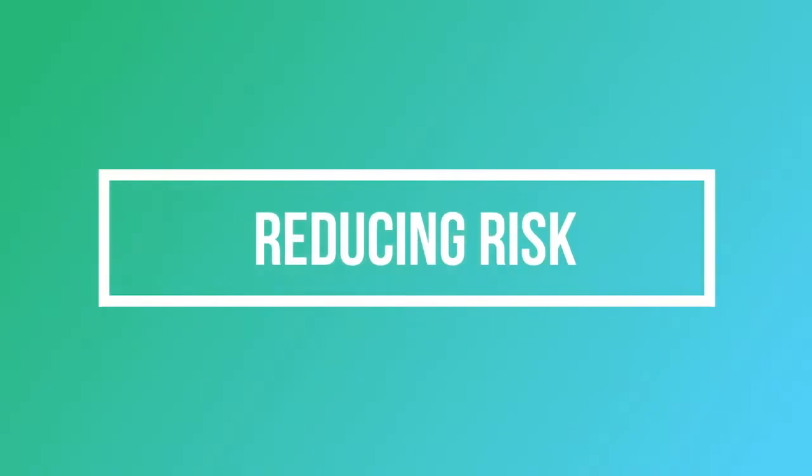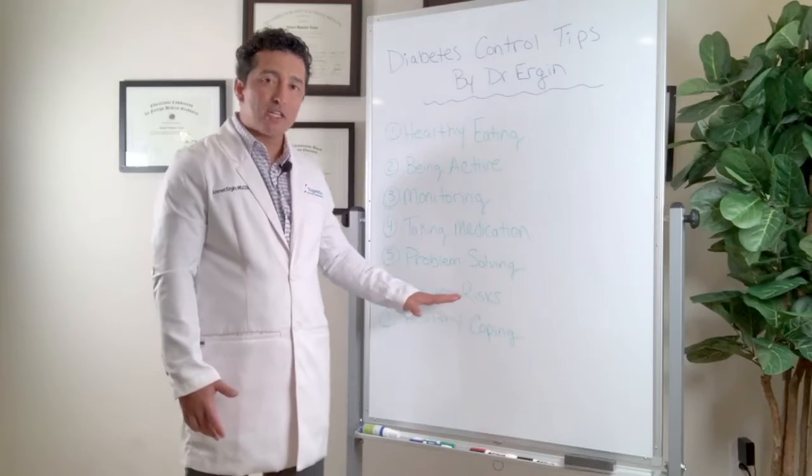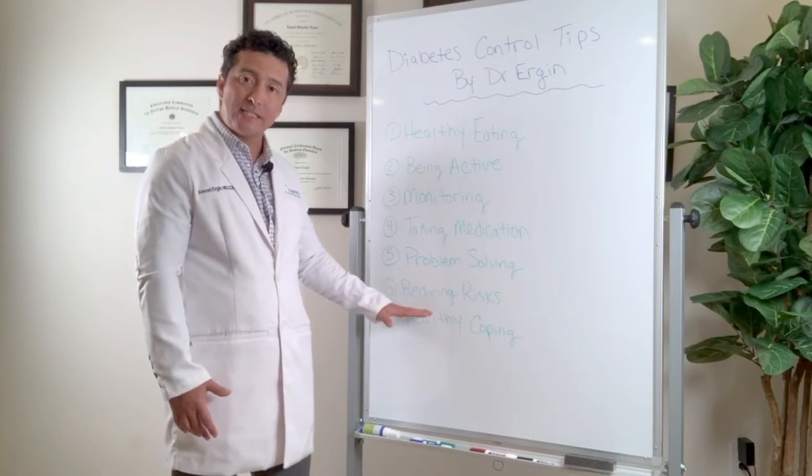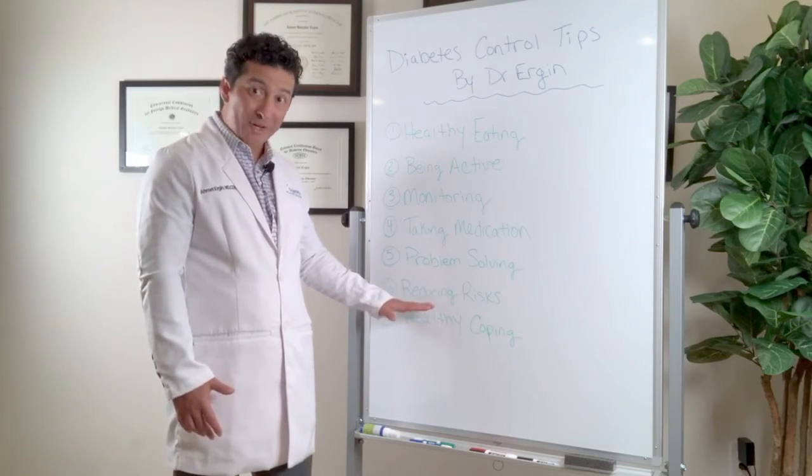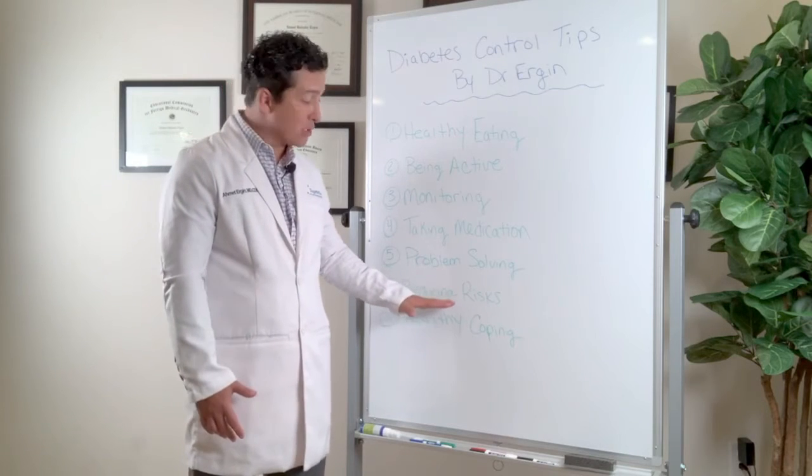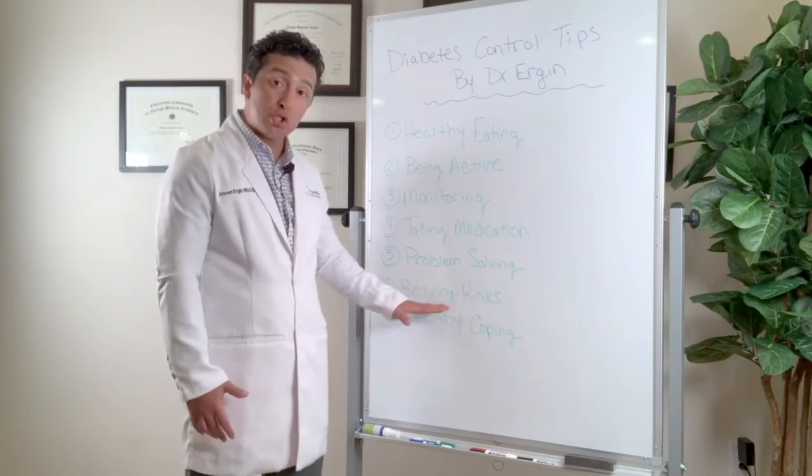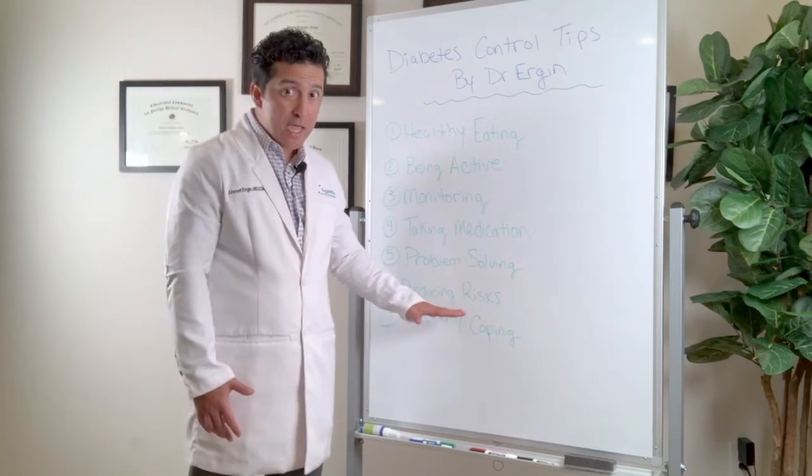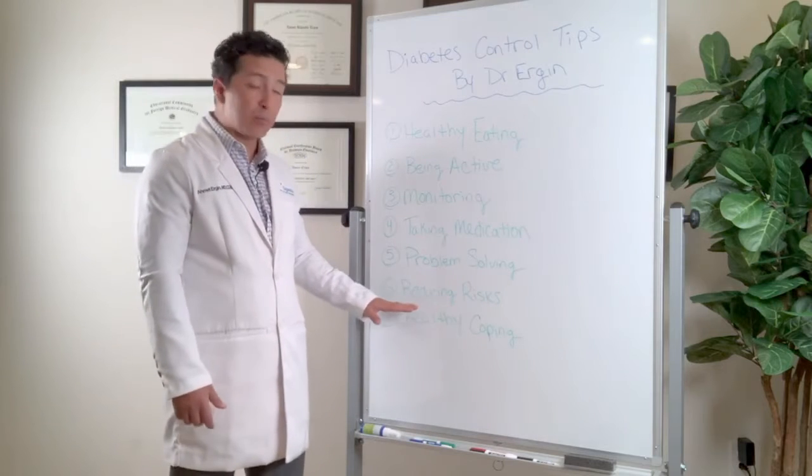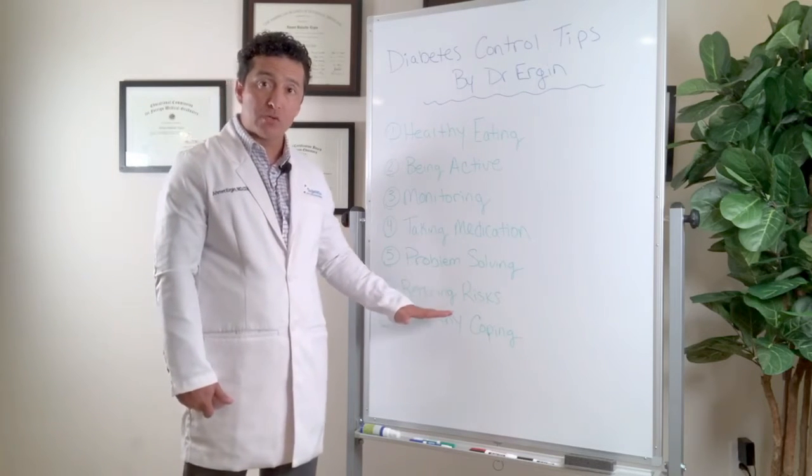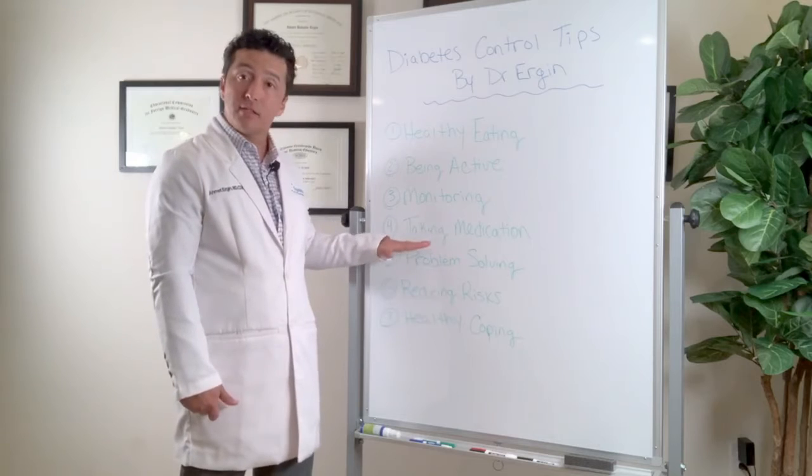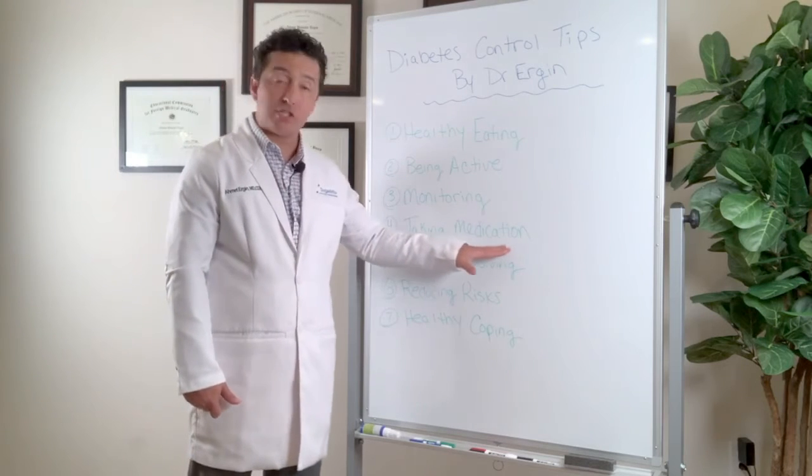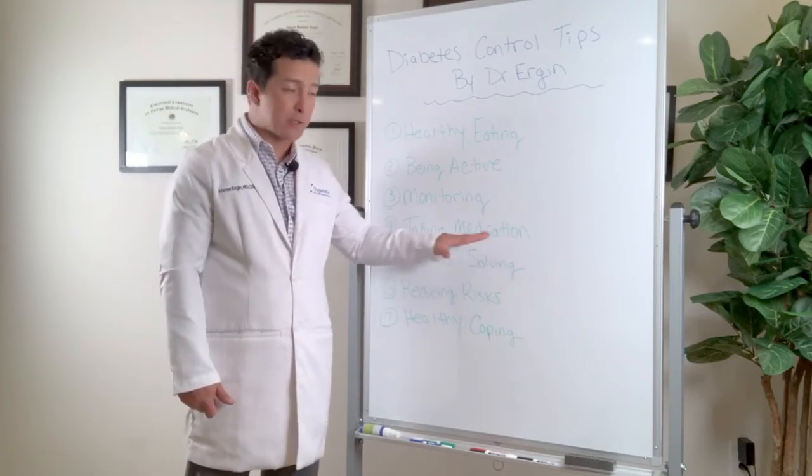Reducing risks. Now reducing risk is very important because just controlling blood sugar doesn't necessarily mean that your heart disease risk or stroke risk is going down. Sometimes to reduce your risk, you also have to control your blood pressure and your cholesterol, and more strict control of blood pressure and cholesterol is generally required for diabetics. And for that, they still sometimes have to take medications, again back to taking medications.